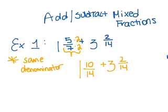So, now I have 1 and 10 fourteenths plus 3 and 2 fourteenths. Now, when you're adding these guys, I actually want you to set this up as if you were adding regular whole numbers. So, keeping in mind place value. In this case, I have my whole numbers here.